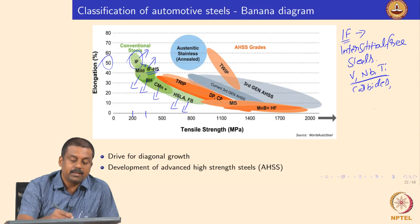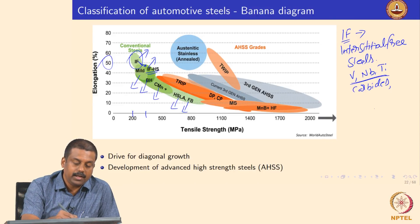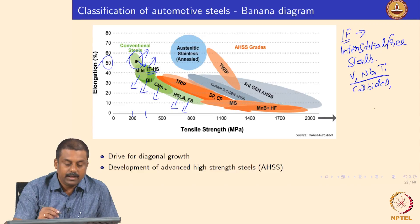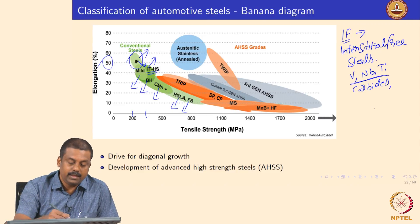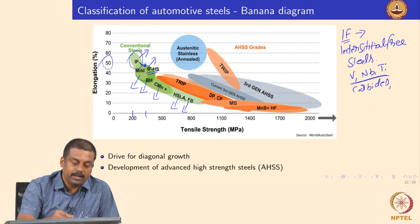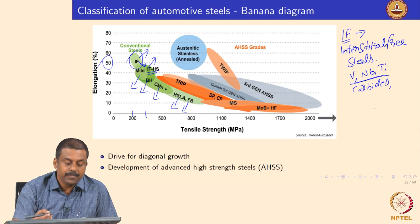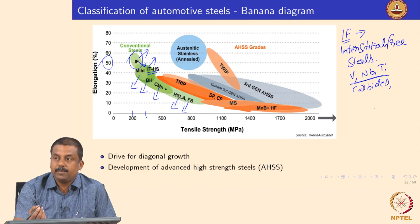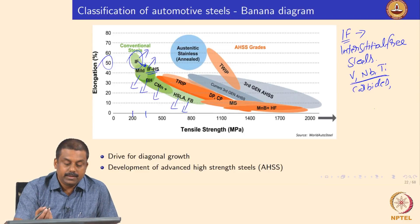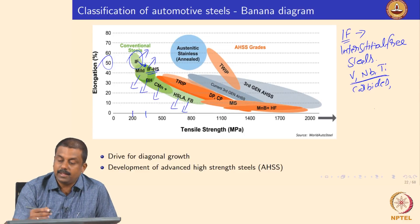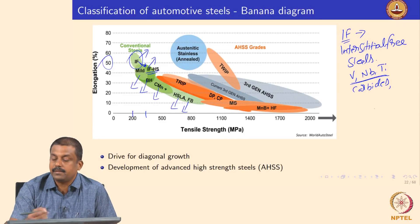By increasing the strength, the elongation decreased slightly, but the IFHS is still considered better than IF because we gain a lot of strength improvement while the ductility remains around 40 percent, which is reasonable to use these steels in place of conventional interstitial free steels.